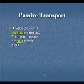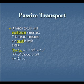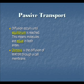Diffusion occurs until equilibrium is reached, meaning the molecules are equal on both sides. It will continue to move around until it's equal on both sides, and then you don't have any more diffusion. Osmosis is the diffusion of water through a cell membrane. So when we're talking about diffusion with regard to cells, we're often talking about the movement of water, and that would be osmosis.